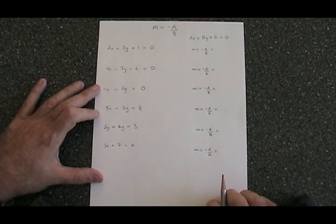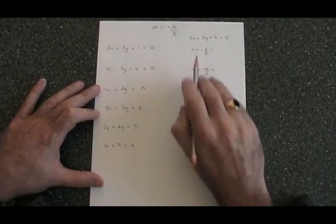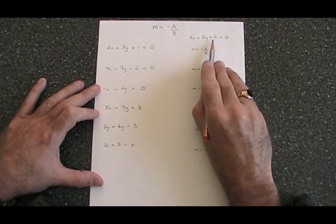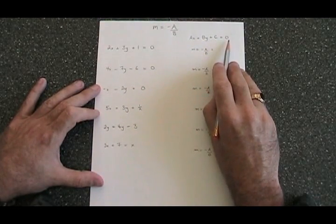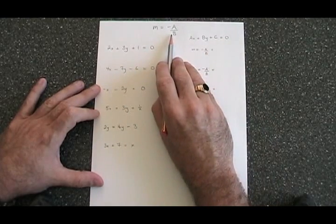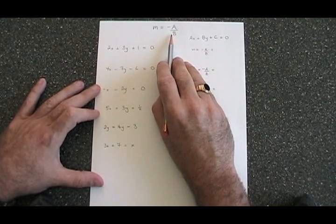If we have a straight line whose equation is in the form ax plus by plus c equals 0, then we can use a simple formula, negative a over b, to find our slope m.